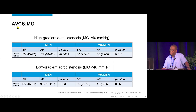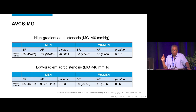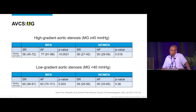We examined the aortic valve calcium score-to-mean gradient ratio, which should be the same in AFib and sinus rhythm patients if both measures are reflecting the same severity. But the ratio was much higher in patients with atrial fibrillation compared to sinus rhythm — meaning that for the same mean gradient, the calcium score was far higher in AFib patients.